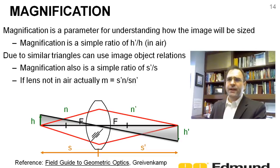We talked about magnification. Magnification is a parameter for understanding how the image size or image height is a function of the object height. And for a lens in air, it's simply a ratio of H prime over H. Now, because of similar triangles, this H and this S versus this H prime and this S prime, magnification is also a simple ratio of your image distance divided by your object distance.